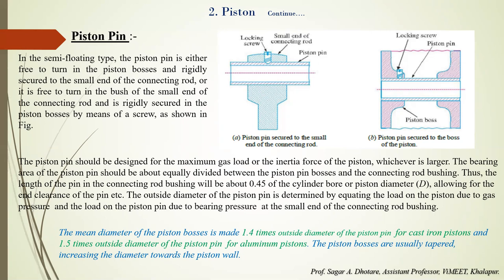The piston pin should be designed for the maximum gas load or inertia force of the piston, whichever is larger. The bearing area of the piston should be equally divided between the piston pin bosses and the connecting rod bushing. Thus, the length of the pin in the connecting rod bush will be 0.4 times the cylinder bore or piston diameter, which allows for end clearance. The outside diameter of the piston pin is determined by equating the load on the piston due to gas pressure and the load on the piston pin due to bearing pressure at the small end of the connecting rod bushing.